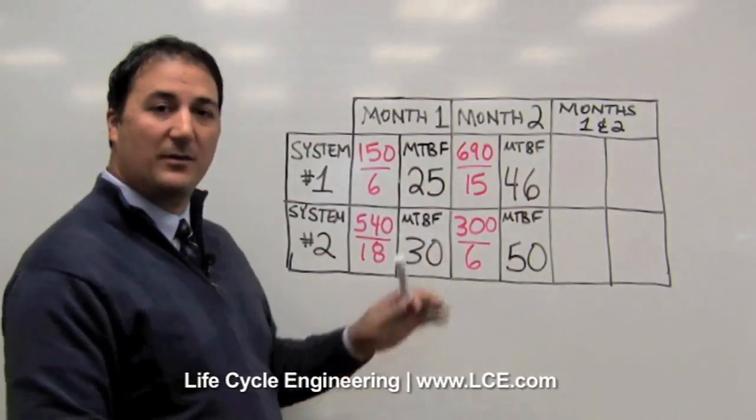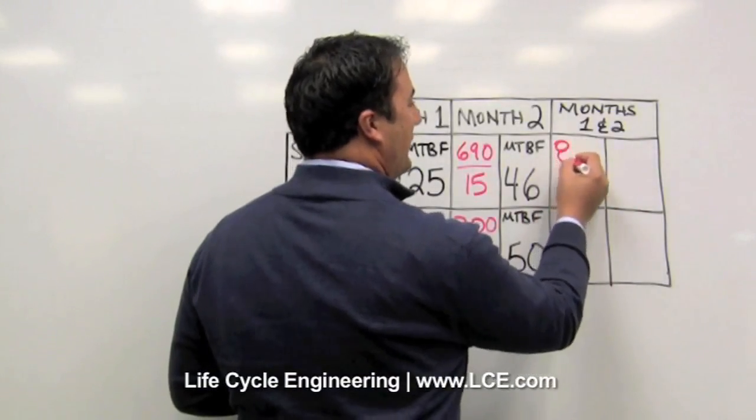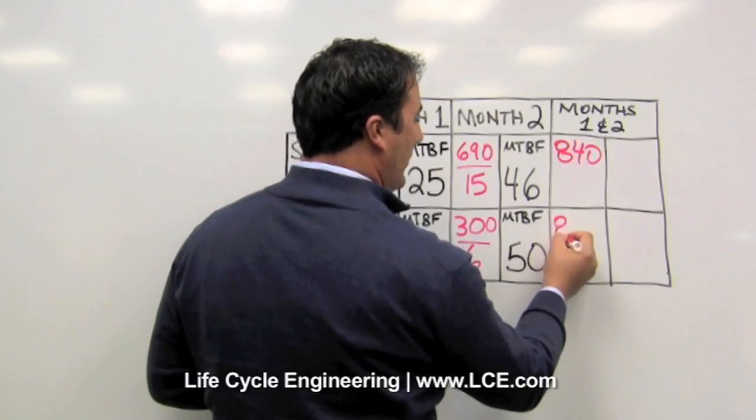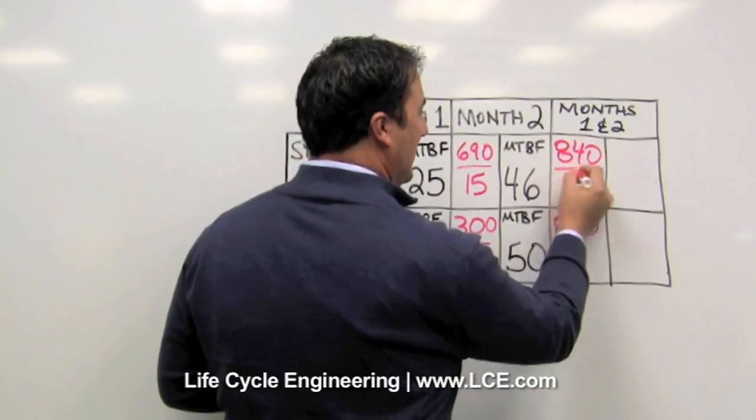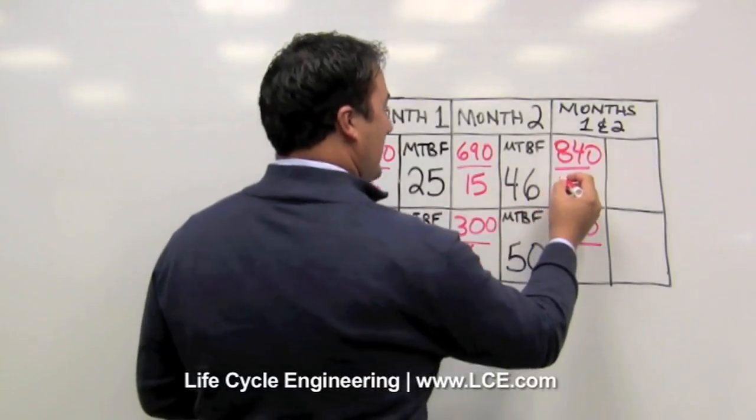We can see that they provided that data for each month and for each system. But what we find out is that as we go into the last two months and we combine those two months together, we actually find out that both systems ran for 840 hours, but the number of failures does not come out to be the same.